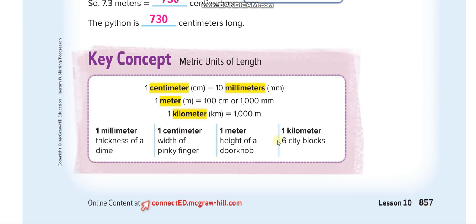Before starting, you have to memorize these three lines in this table — I hope you already know about it. One centimeter is equal to 10 millimeters, and one meter is equal to 100 centimeters. Since one centimeter is 10 millimeters, 100 centimeters equals 100 times 10, which is 1000 millimeters — so one meter is also equal to 1000 millimeters. One kilometer is equal to 1000 meters. We will use these conversions in today's lesson.